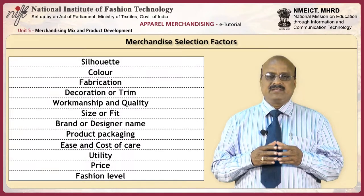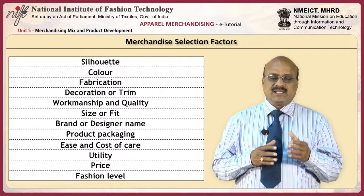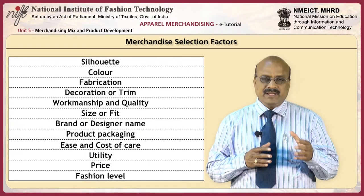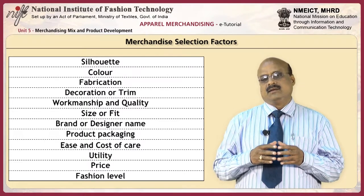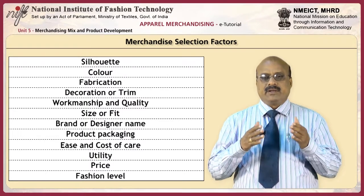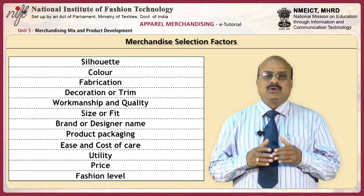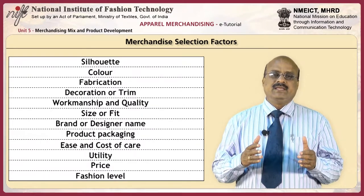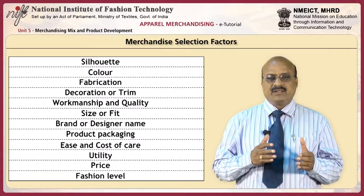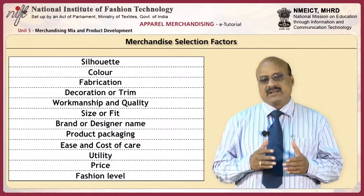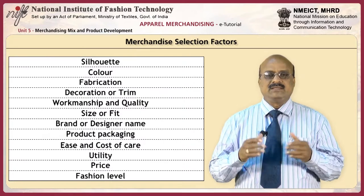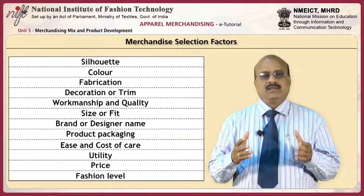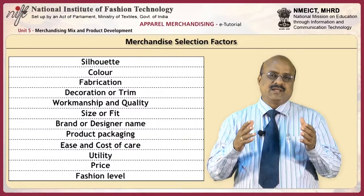Listed here are factors for selecting merchandise. They are silhouette, color, fabrication, decoration or trim, workmanship and quality, size or fit, brand or designer name, product packaging, ease and cost of care, utility, price and fashion level.